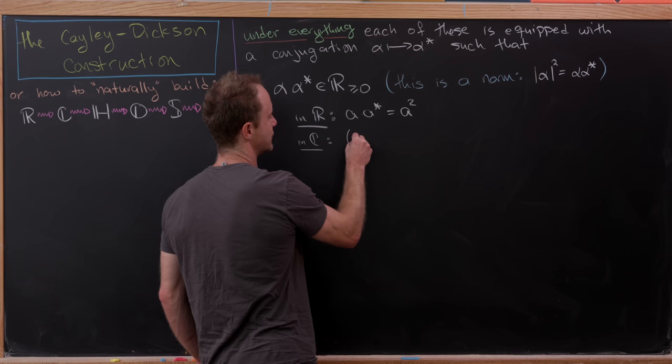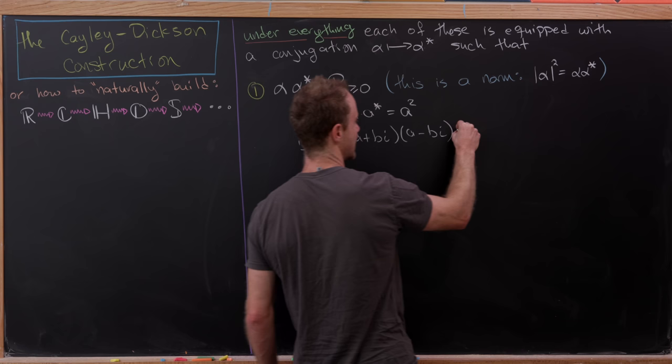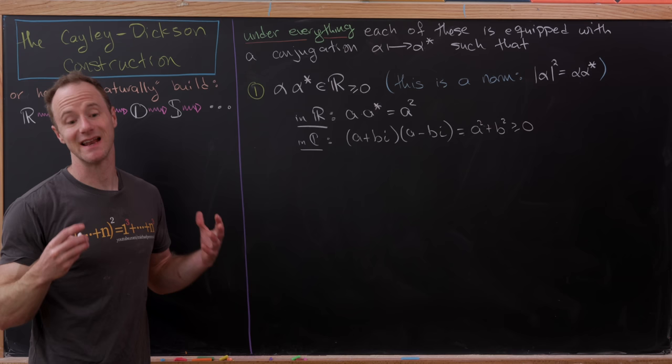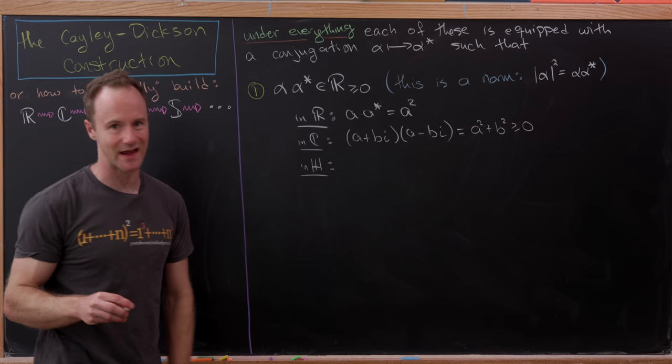Inside of the complex numbers, if you take a complex number a plus bi and multiply it by its conjugate a minus bi, you get a-squared plus b-squared. Since a and b are real numbers, a-squared and b-squared are positive real numbers — so that's a non-negative real number.